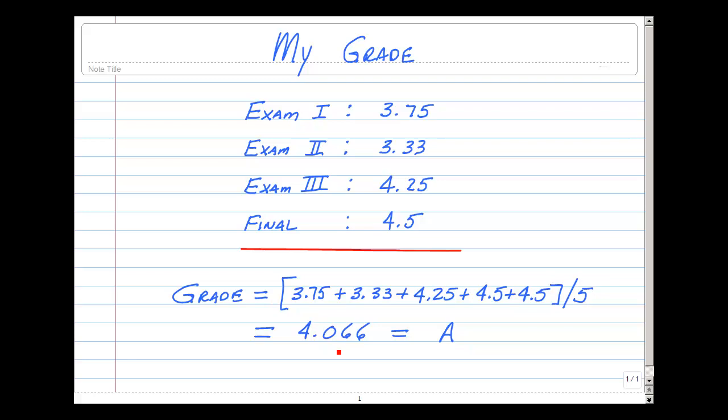We had three one-hour exams and one two-hour exam, so that's equivalent to five one-hour exams. Take the first score plus the second score plus the third score and then your final twice and divide that by five. In this case, the student got a 4.066 and that would be an A. If you got 4.5 or higher, that would be an A+. If you got 4.75 and higher, I would consider it to be an A++. Congratulations on finishing ECE 201.